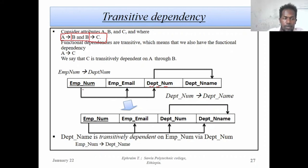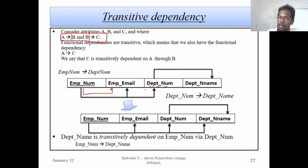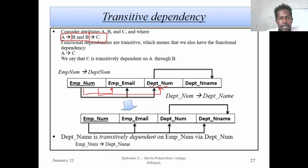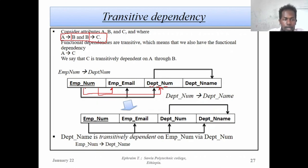Employee number can determine employee email. Employee email determines department number as a foreign key within the employee table. Employee number as a primary key determines employee email and department number.